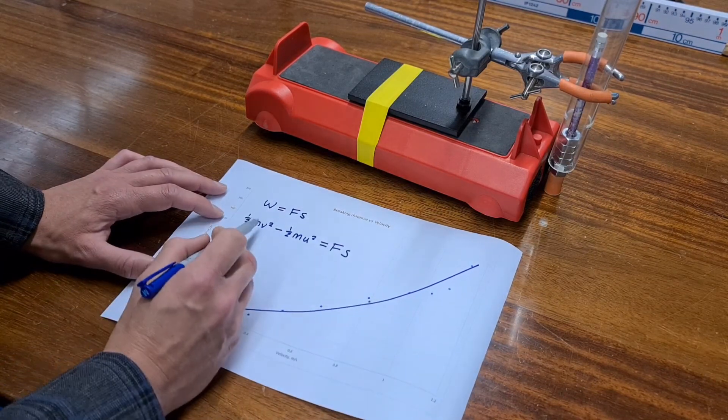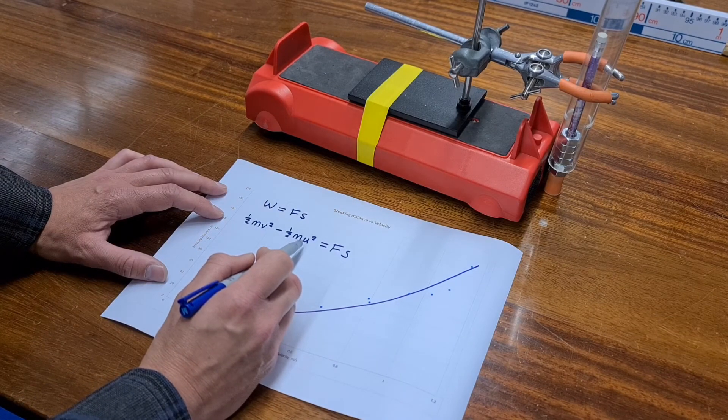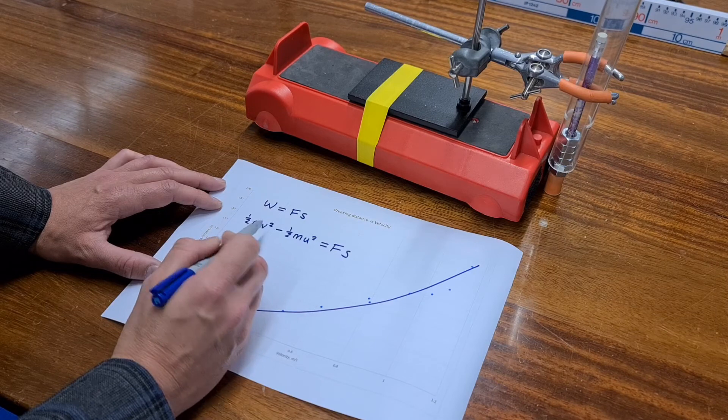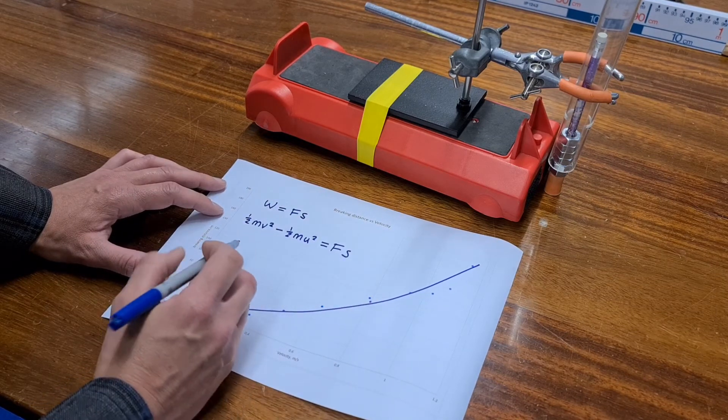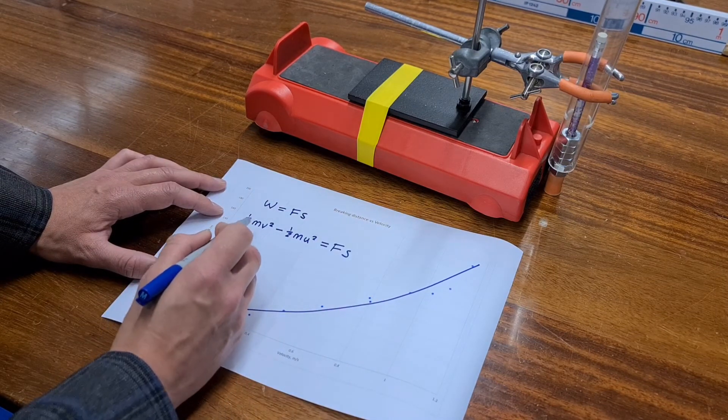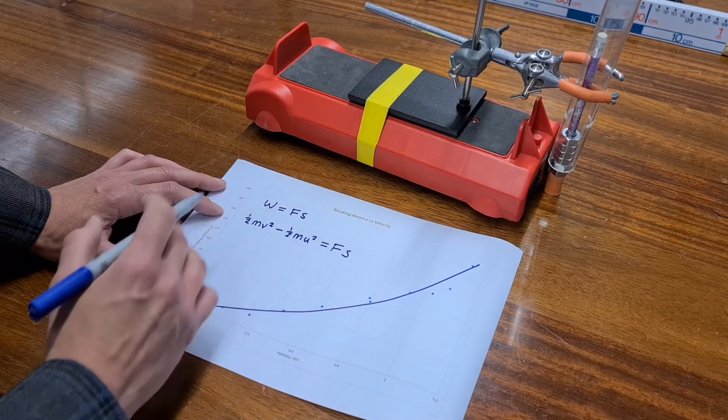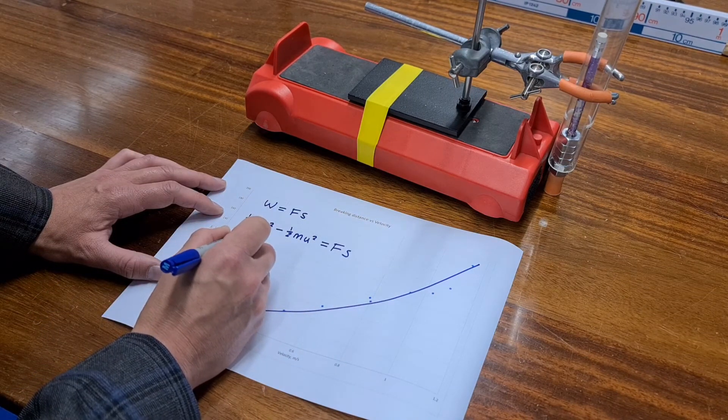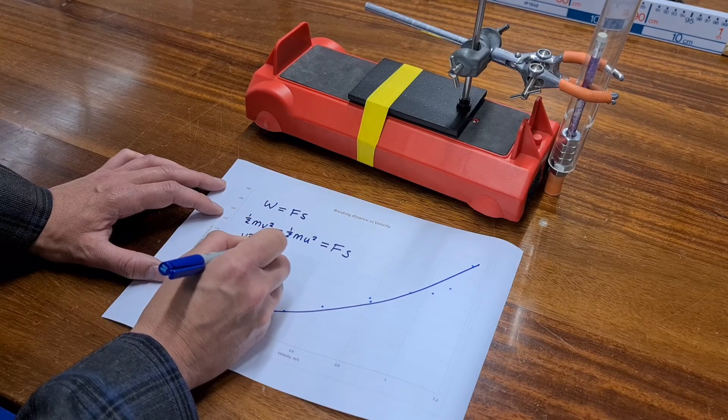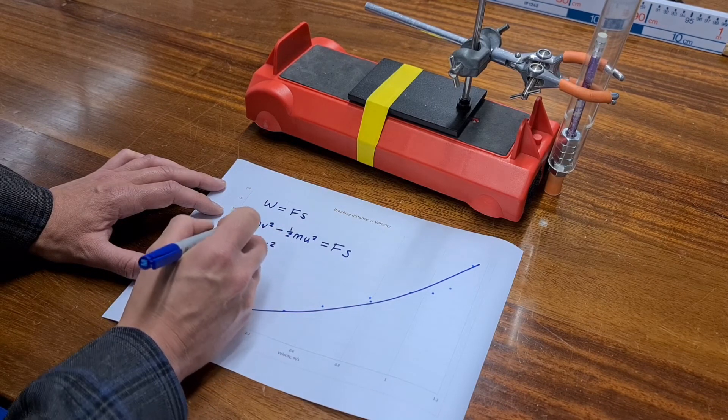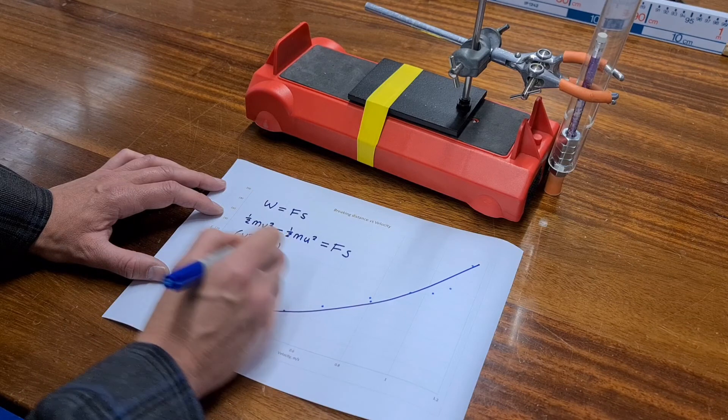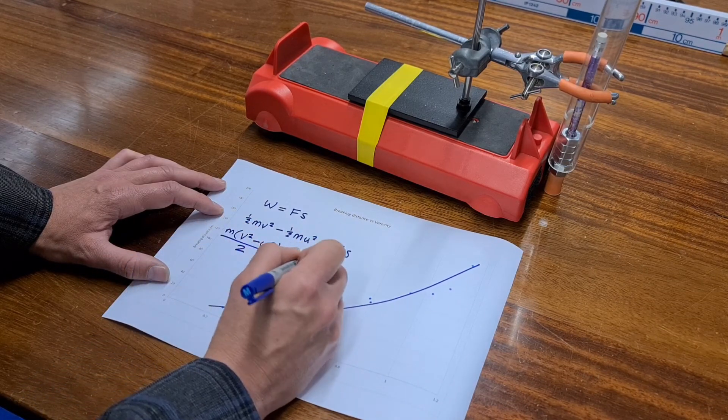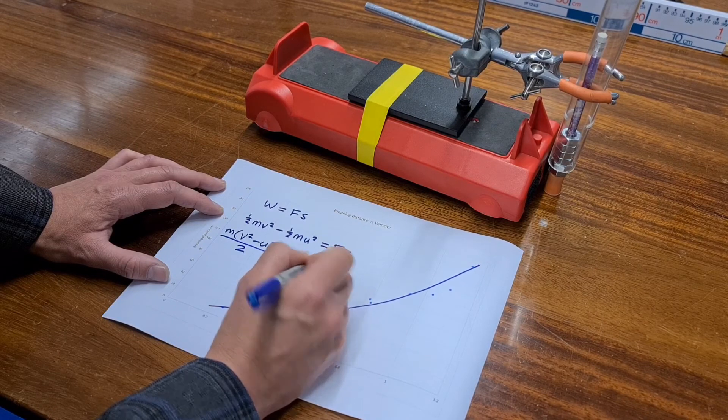Now I want you to consider v squared and u squared. They are both multiplied by a half m. Or we could describe it as multiplied by m and divided by 2. Either way, we can see that that is a common factor. And so v squared minus u squared, all multiplied by m and divided by 2 is equal to force times displacement.